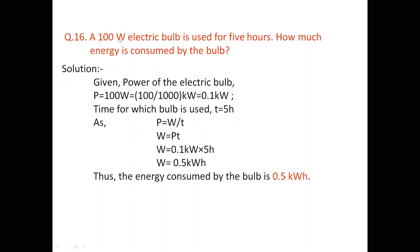Question number 16: A 100 watt electric bulb is used for 5 hours. How much energy is consumed? We have to calculate the work done again. Given that power of electric bulb is 100 watt. We will convert 100 watt to kilowatt by dividing it with 1000.